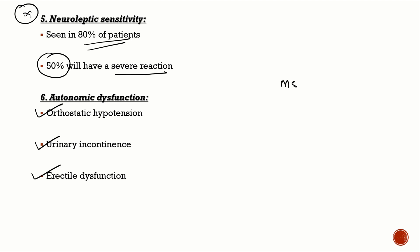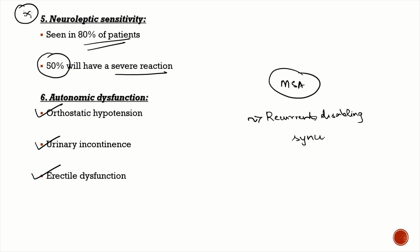To differentiate from multiple system atrophy: autonomic dysfunction is very predominant in MSA. In multiple system atrophy, the patient will have recurrent, severe, disabling syncope; laryngeal spasms; and anterocollis. These features suggest the diagnosis is more in favor of multiple system atrophy, which is also an alpha-synucleinopathy.